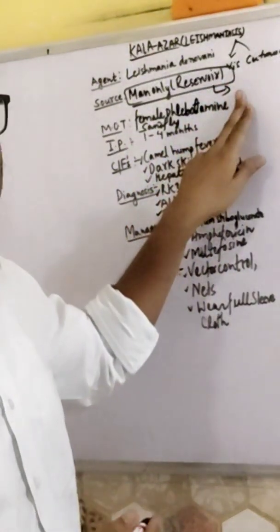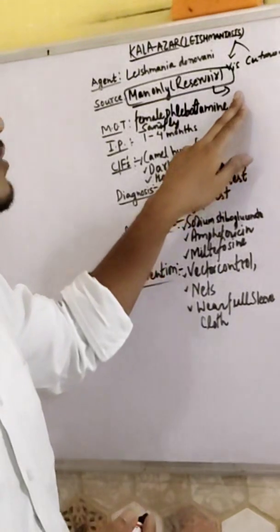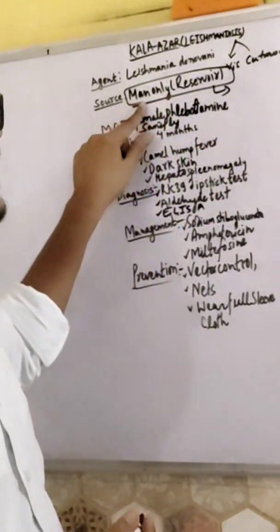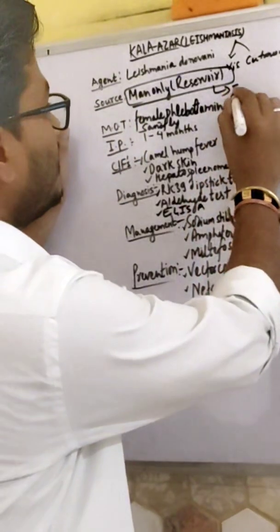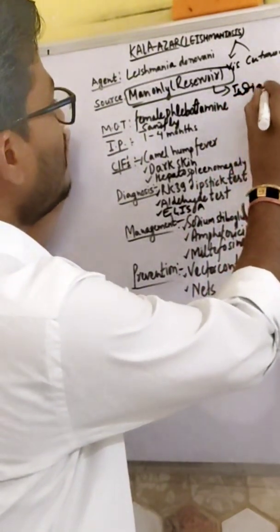Otherwise, fox, cat, and dog can also be reservoirs. But in the case of Indian Kala-azar, man is the only reservoir.